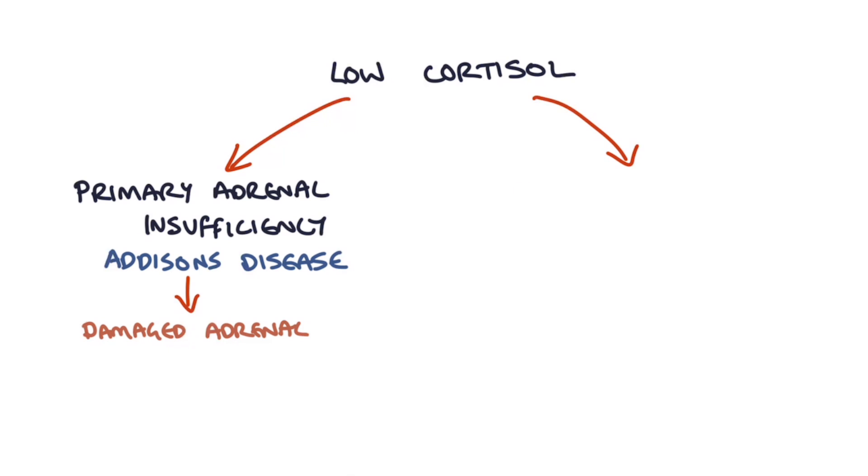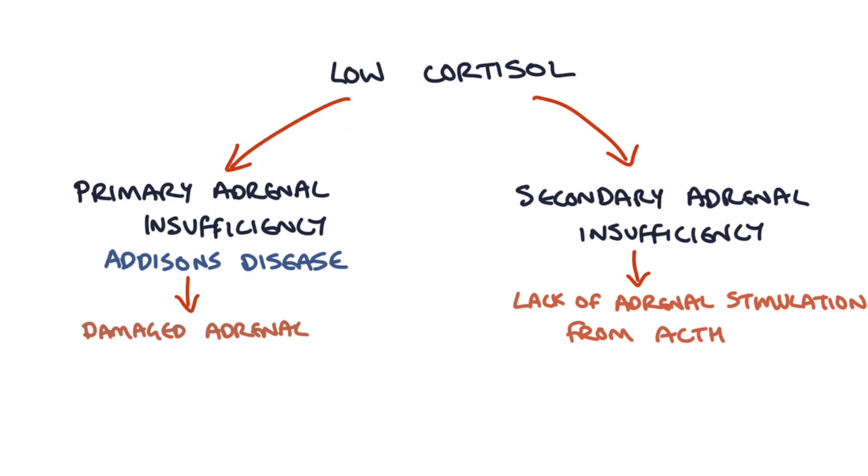The second is secondary adrenal insufficiency, and this is where there's a lack of stimulation of the adrenal glands by adrenocorticotropic hormone or ACTH. This is usually in response to damage to the pituitary gland, so it's not producing enough ACTH.